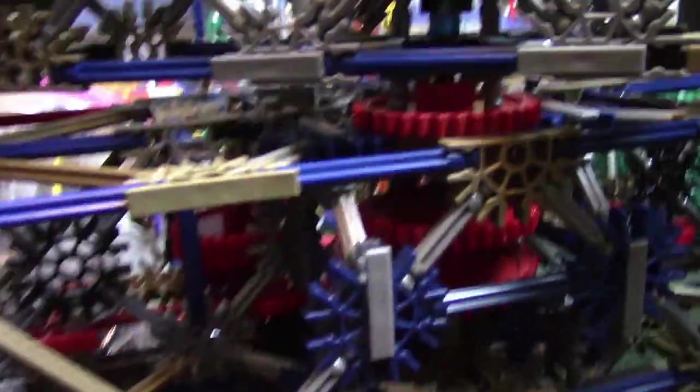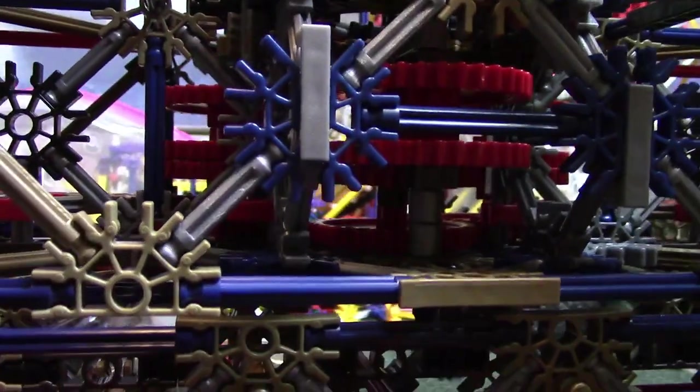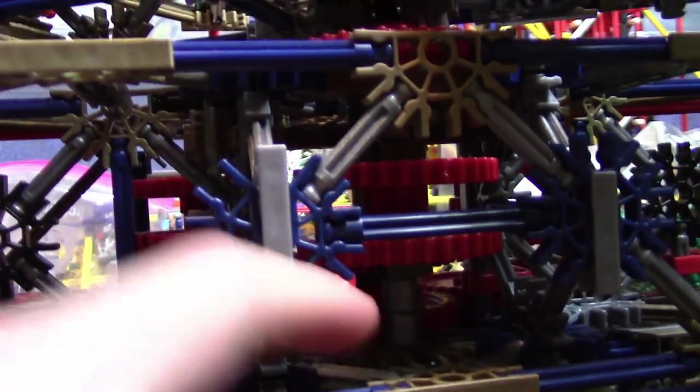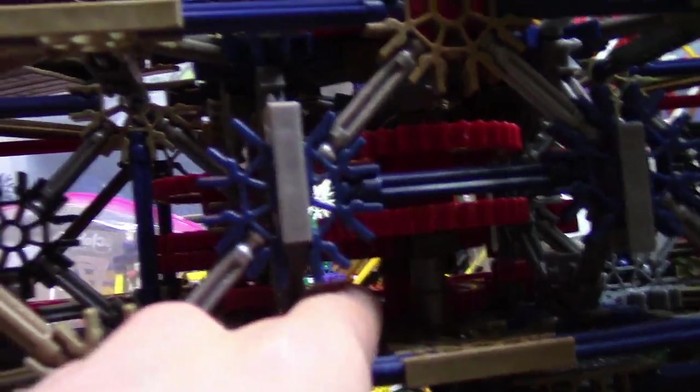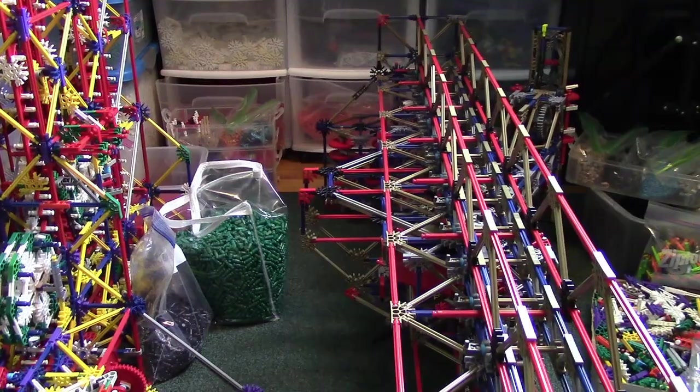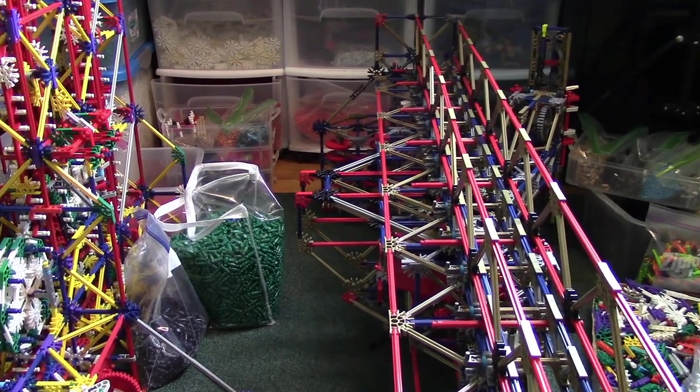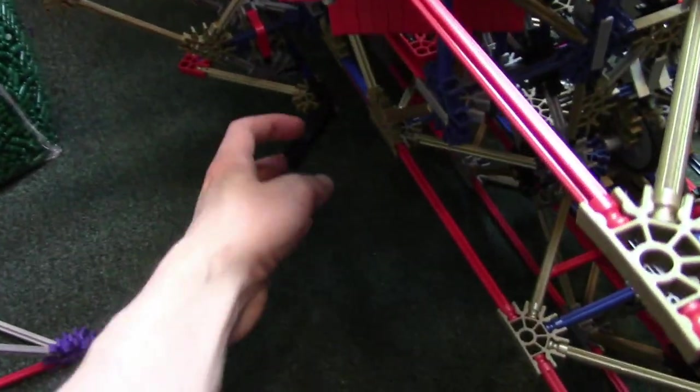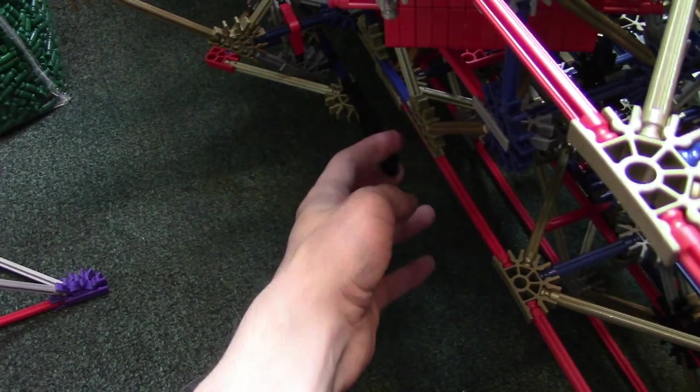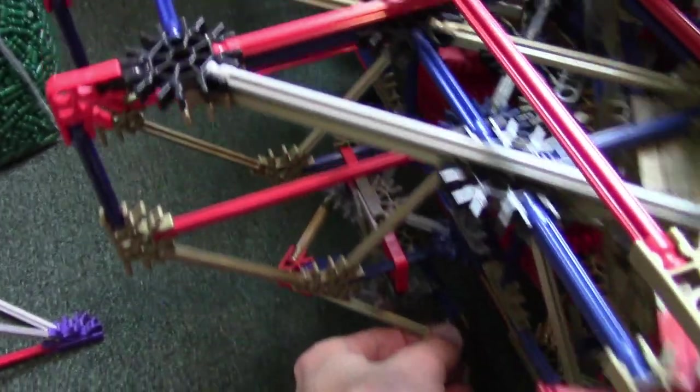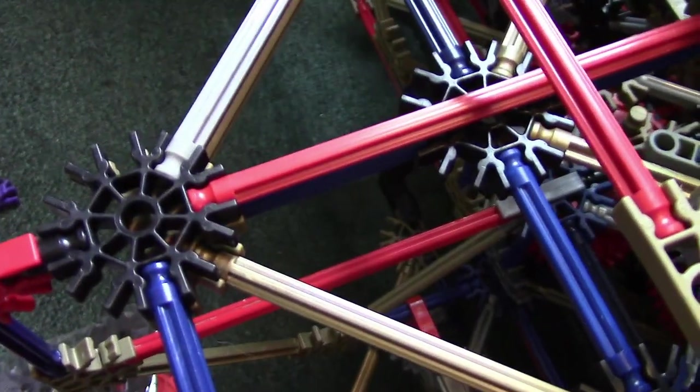Maybe you can see the gearing better from this angle. That right there is the third joint, and that in there is the second joint. I decided to make the chain for the first joint be in the back instead of the front, just because it was easier to loop it around. It starts right here and it ends on the other side down there.